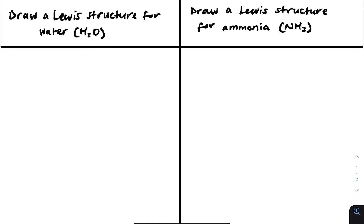Hi everyone. In this video we're going to be going over Lewis structures, which are a very important part of IB chemistry. A Lewis structure is basically just a visual representation of a compound.